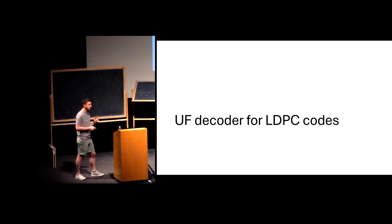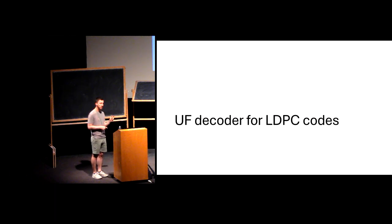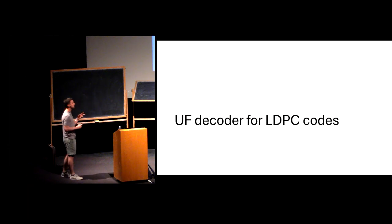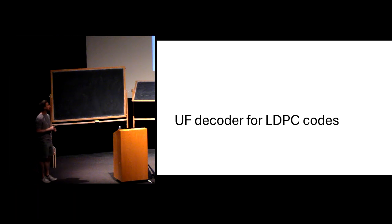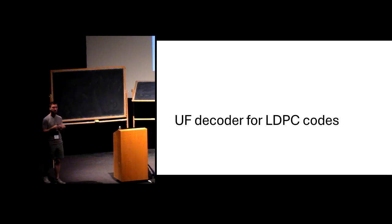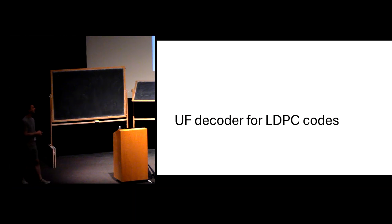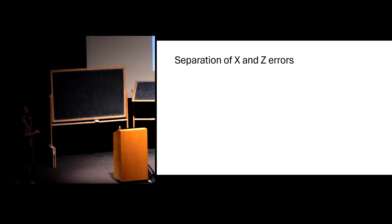We're going to look at two different decoders: the union-find decoder for LDPC codes, and BP-OSD. For LDPC codes, BP-OSD likely performs better, though we need a better comparison. The union-find decoder for LDPC codes was developed trying to prove something: we can prove it corrects a polynomial number of errors and are trying to push further. Both are still active research questions with a lot of improvement needed. The decoders are also currently too slow — their complexity is very far from linear.